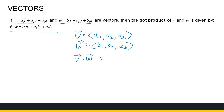What we do is we multiply the corresponding components and add them: A1·B1 plus A2·B2 plus A3·B3. So that gives me the dot product.